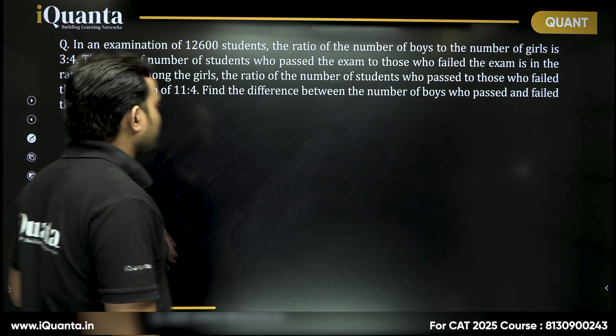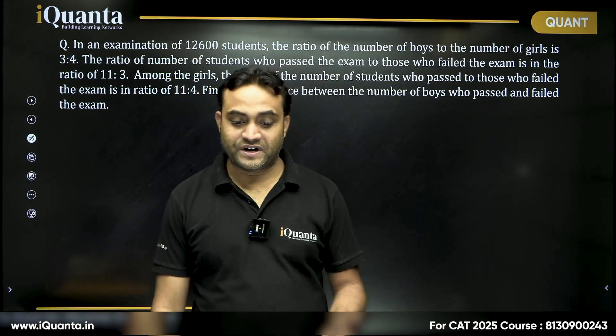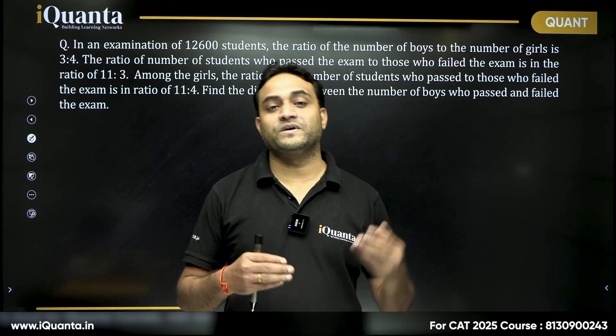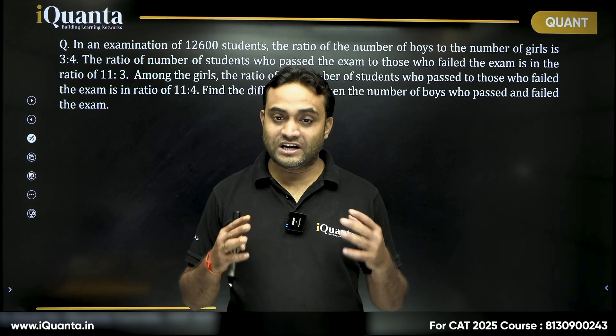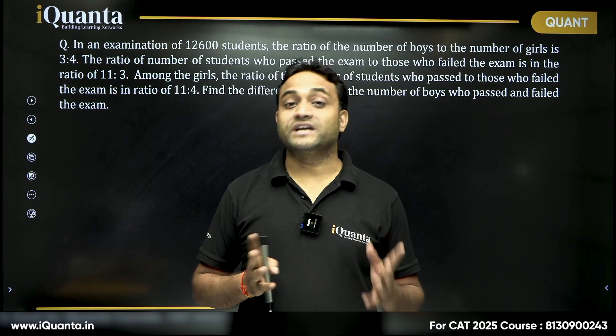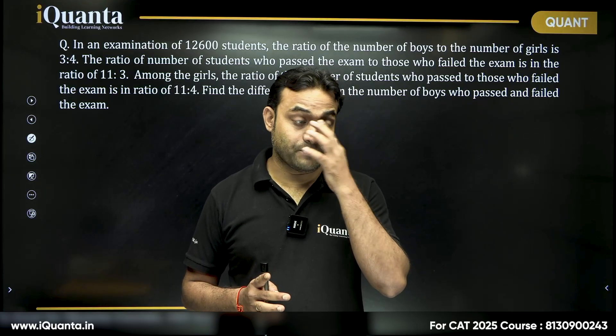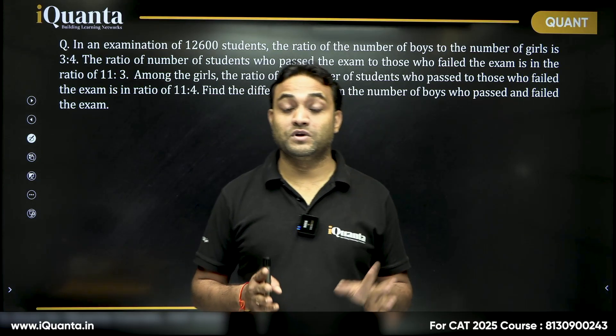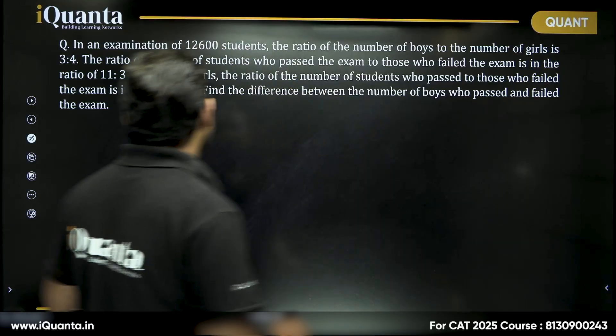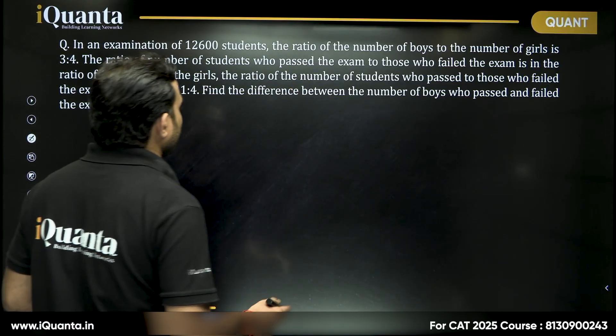So in this kind of questions where we have two different attributes and two different categories, it's really good if you make a table. Okay, it's not a DI problem, but still making a table will be very helpful. You won't be confused at any point of the time.